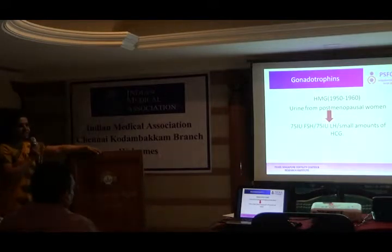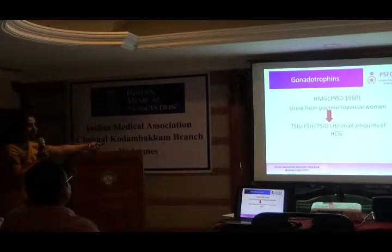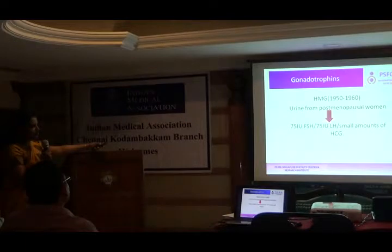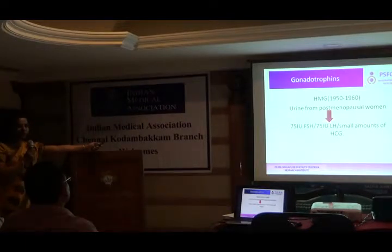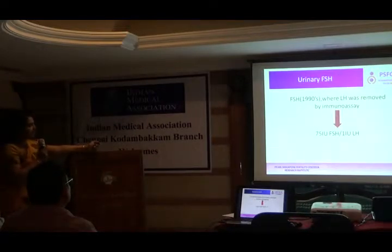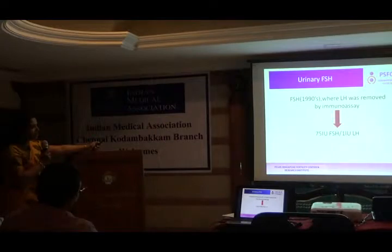Regarding gonadotropins: initially during the 1950s and 1960s, they used to extract urine from postmenopausal women — mostly nuns from a particular convent in Italy. That urine from postmenopausal women has FSH and luteinizing hormone. When injected into people who were anovulatory, they started becoming pregnant. That is how HMG — human menopausal gonadotropin — was discovered. Then, coming after 40 years, was urinary FSH where the LH was removed by immunoassay.